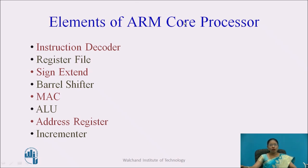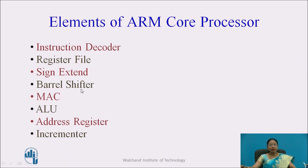The elements of the ARM core processor include: an instruction decoder for decoding instructions; a register file, since data manipulation requires a register file as the source; sign extend hardware; a barrel shifter; MAC, which is the multiply accumulate unit; ALU, the arithmetic logic unit; and an address register with an incrementer. These are the different elements of the ARM core processor, and we will see the same elements in the diagram.